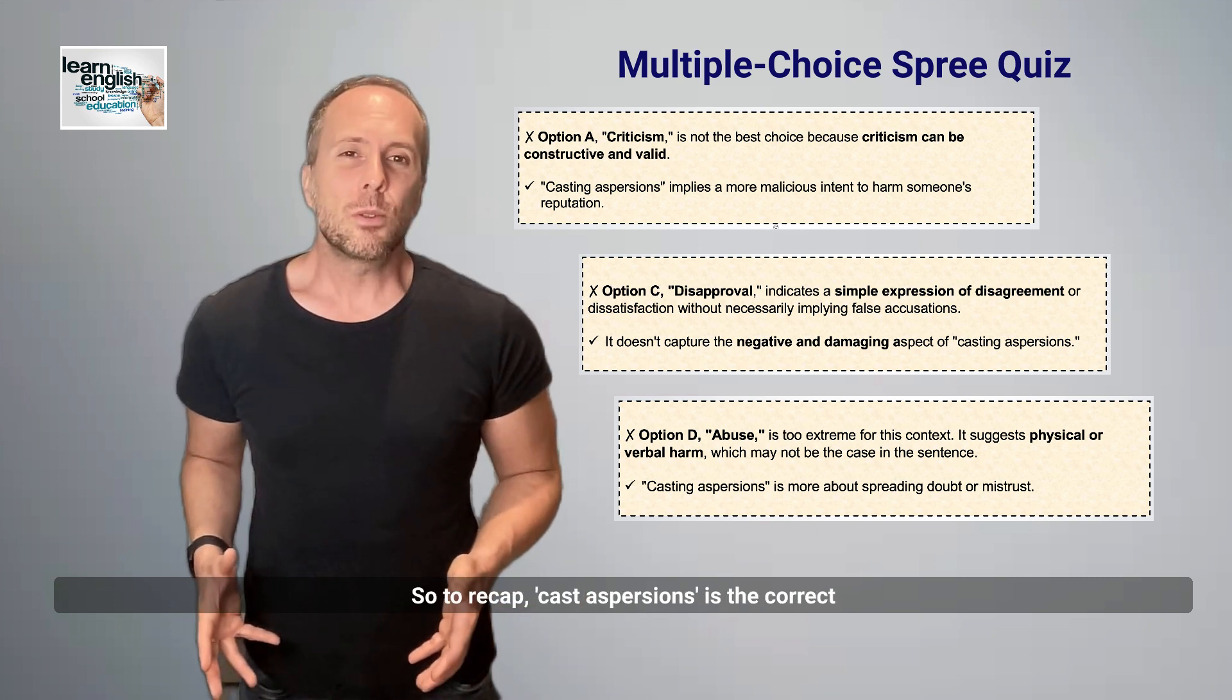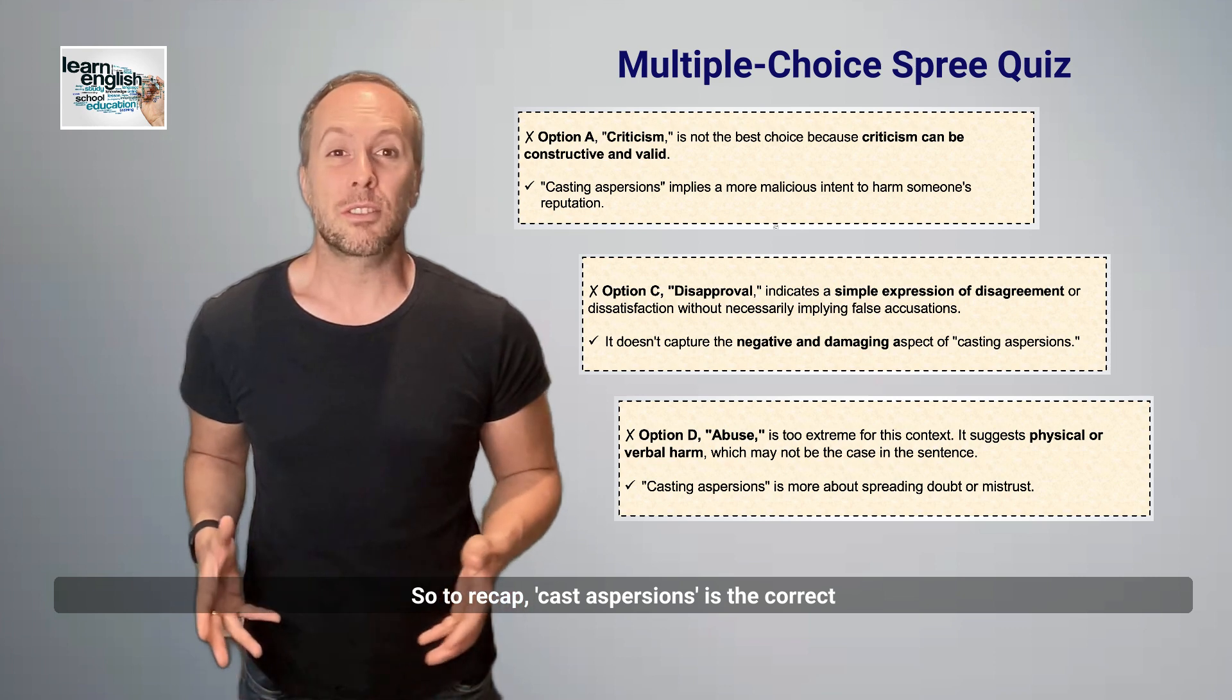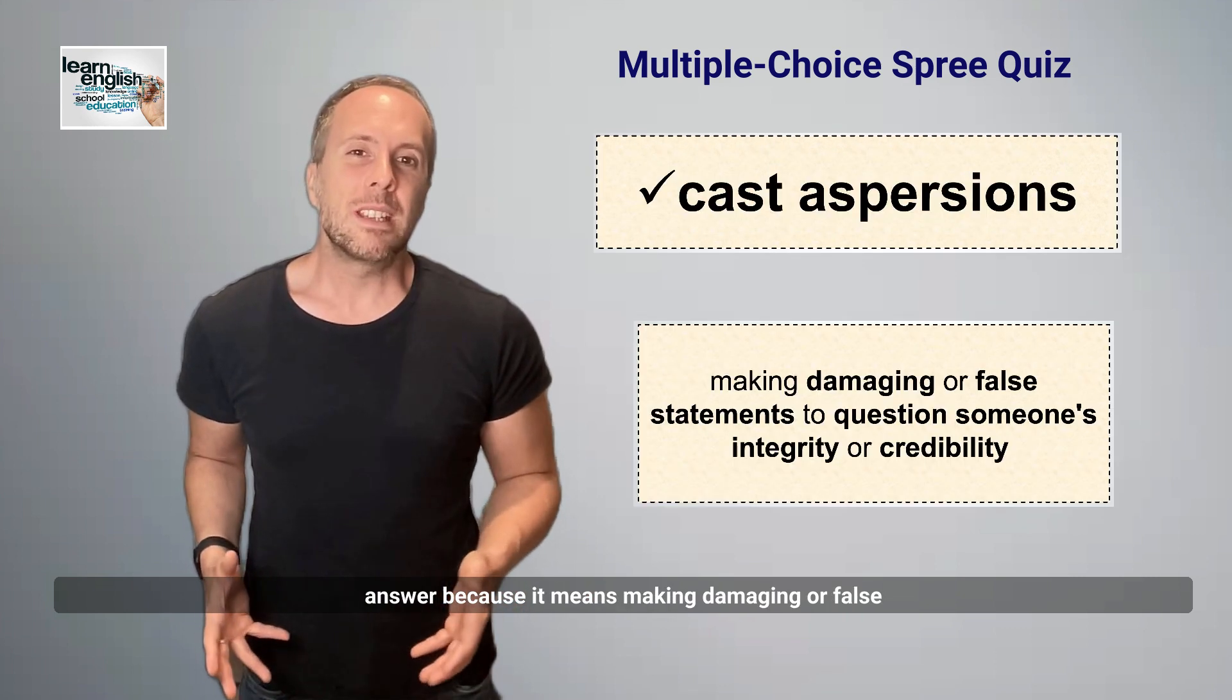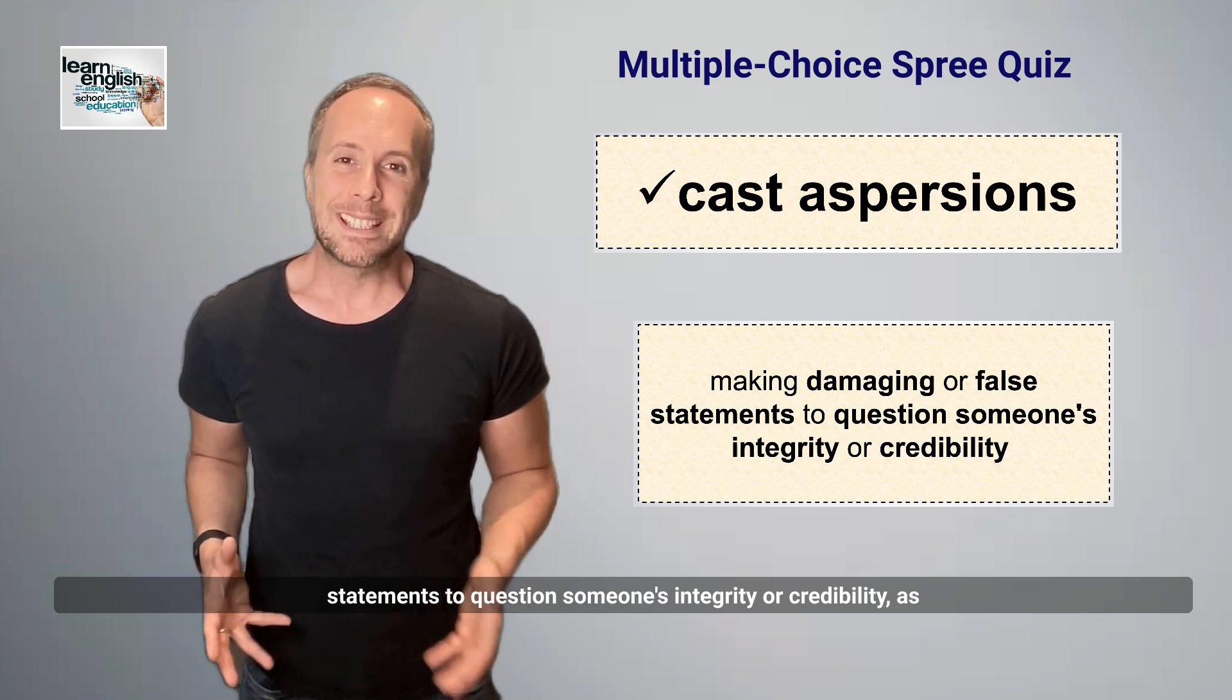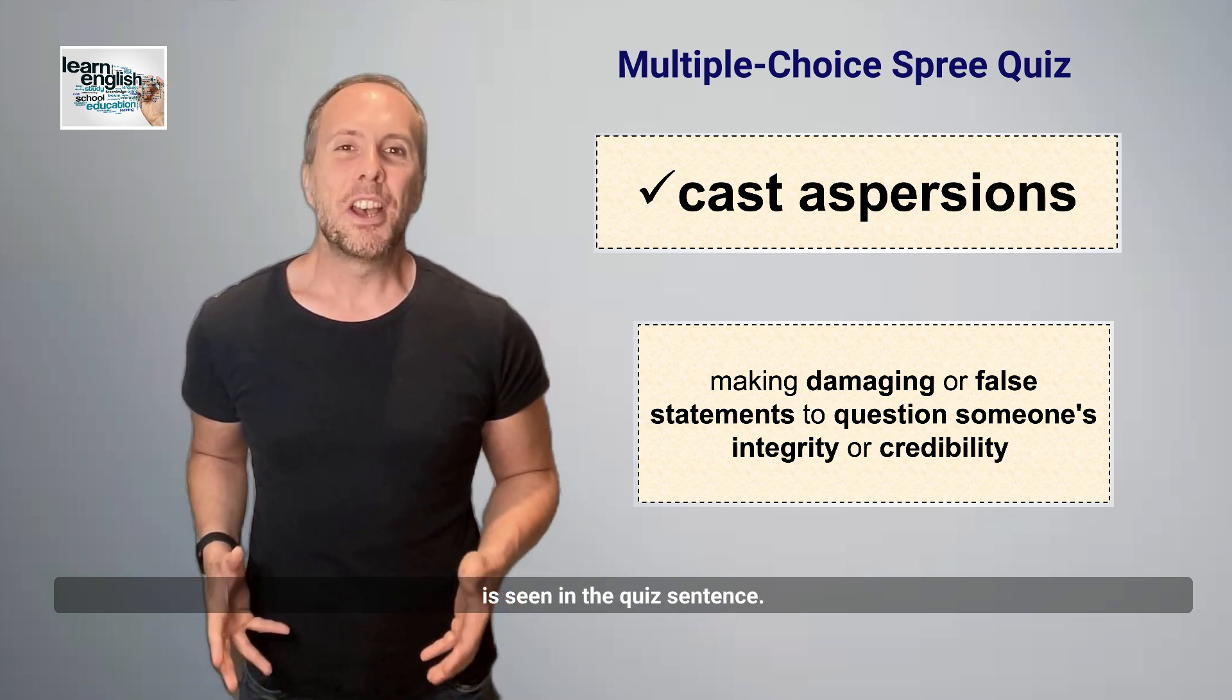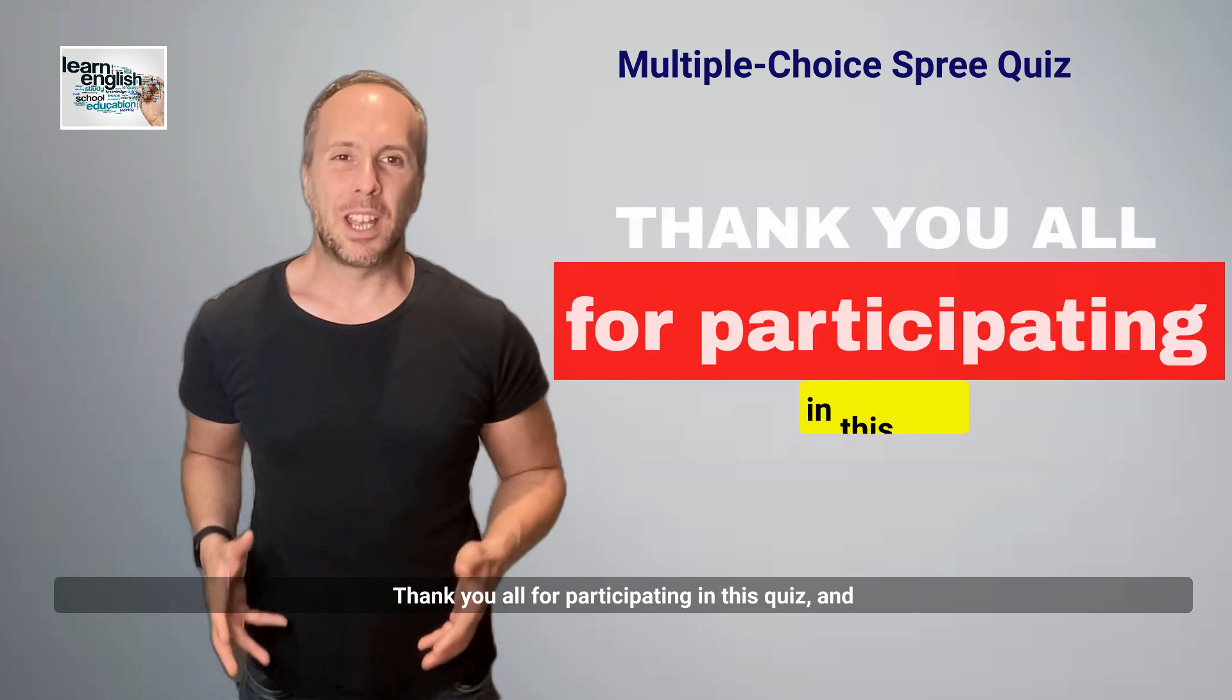So to recap, cast aspersions is the correct answer because it means making damaging or false statements to question someone's integrity or credibility, as is seen in the quiz sentence. Thank you all for participating in this quiz, and I hope this video has helped you understand the phrase cast aspersions a little bit better.